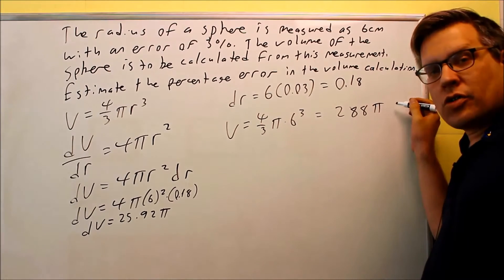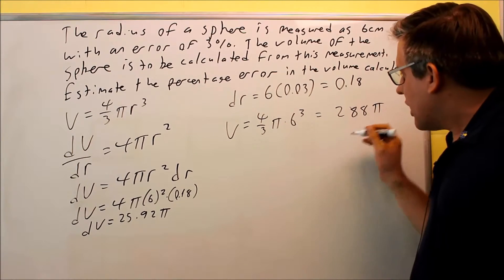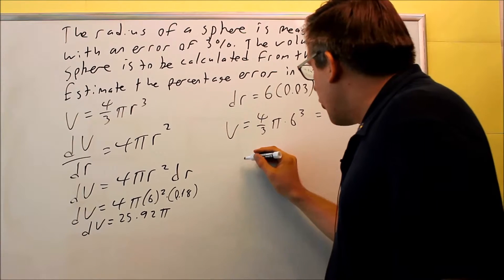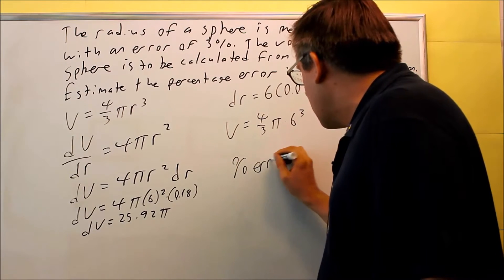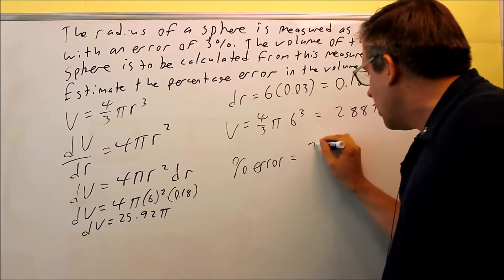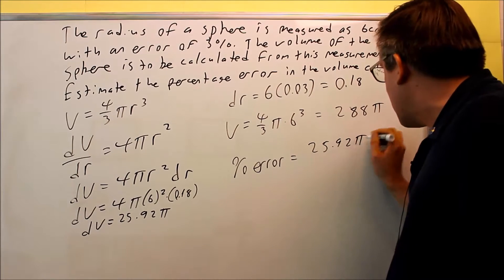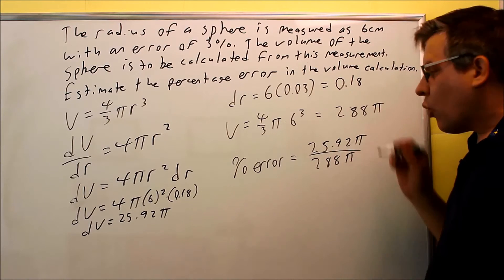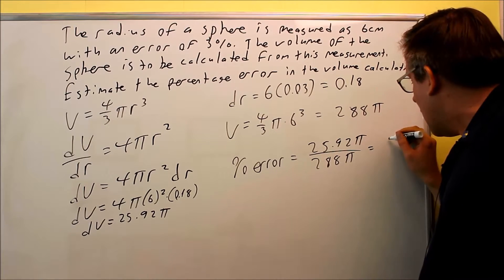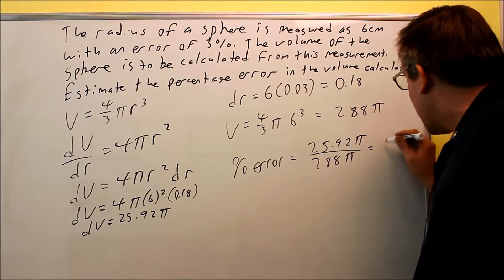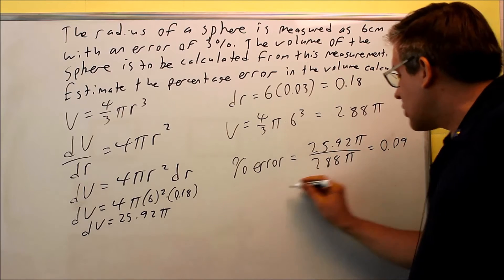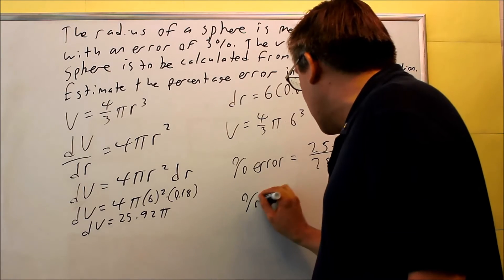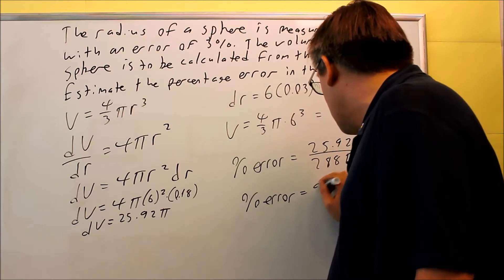So for my percent error, it's going to equal 25.92π divided by 288π, and then when I divide all this, that's going to give me 0.09, and so that means my percent error is going to be 9%.